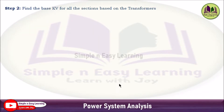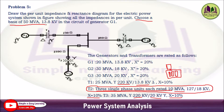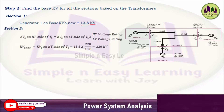Now find the base value for all sections based on the transformers. The base MVA is 50 MVA and base kV of 13.8 kV is specified for generator G1. For section 1, base kV = 13.8 kV. For section 2, KVB on HT side of T1 = KVB on LT side × (HT rating / LT rating) = 13.8 × (220/13.8) = 220 kV.